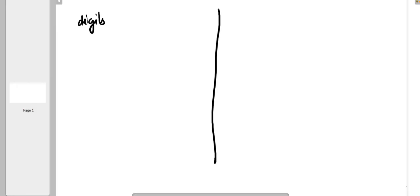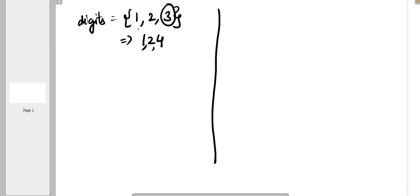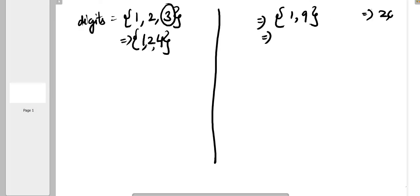There are basically two types of cases. First, a digits array like [1,2,3] where you just need to increment the last digit and you get [1,2,4]. Second, a case like [1,9] representing 19 — when you increment 19 it should be 20, giving [2,0]. So whenever the last digit is 9, you need to set that particular digit as 0 and increment the next digit.